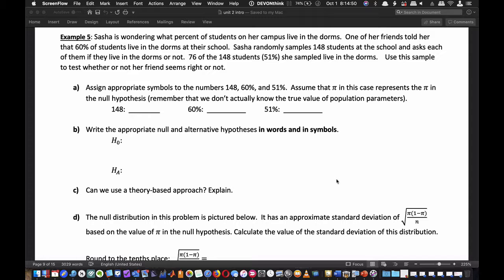Sasha is wondering what percent of students on our campus live in the dorms. One of her friends told her that 60% of students live in dorms at their school. We're going to use that 60% as our substitute parameter for our population proportion π because we don't really know the true value. One reason we do these simulations or take smaller samples is because it's impractical to ask every single student if they live in the dorms or not.